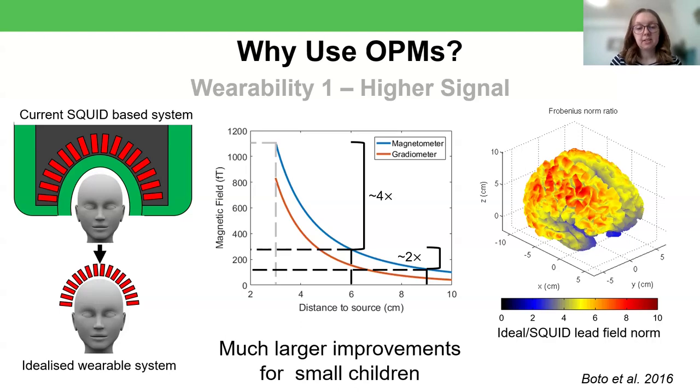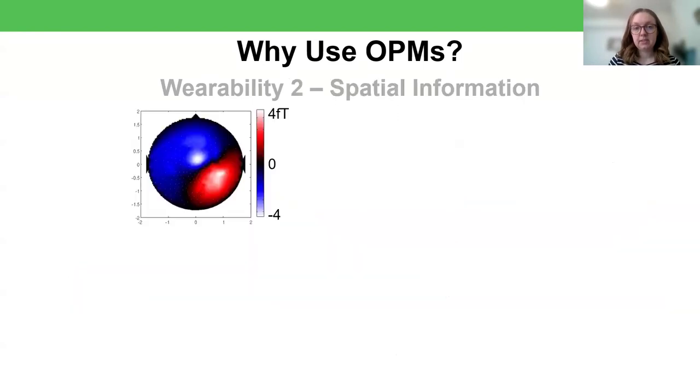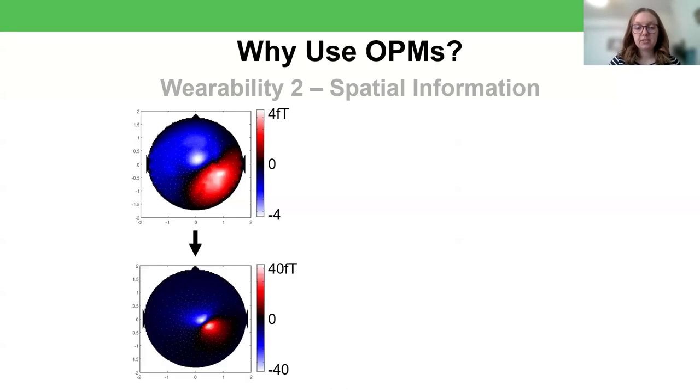The other bit of nuance to consider is that we'll see much larger improvements for children simply because their heads are smaller. And so the actual increase in distance between the source in the brain and the sensors will be much bigger for them by bringing the sensors onto the scalp. An additional advantage of wearability is that you get higher spatial information. So if this is the sort of topography that we might see in our squid system, if we brought the sensors onto the scalp, what we see looks effectively much much tighter. As well as seeing the signal increase going from 4 femtotesla to 40 femtotesla, the peaks on topography have become much more peaky.